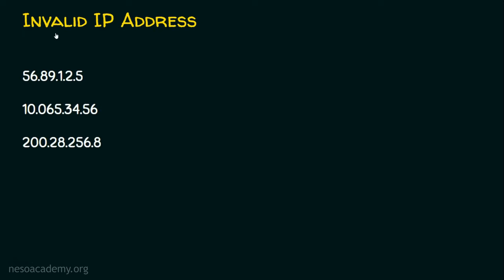Now let's see some invalid IP addresses. The first example seems like a valid IP address because every octet is between 0 and 255, but when we look closely, we can see there are 5 octets — 1, 2, 3, 4, 5. A valid IPv4 address will have only 4 octets. In the second example, we have only 4 octets and the values are between 0 and 255, but it is still invalid because 65 is prefixed with a 0. Prefix 0 is not permitted in an IPv4 address — simply 45 or 65 is accepted. The last example appears valid, but the third octet is 256, which is bigger than 255. We cannot represent 256 with 8 bits, so that is invalid.